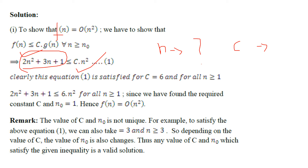The values of c and n₀ are not unique — you can have multiple cases. Depending on the value of c, the value of n₀ can also change. You have to show that for some value of c and n₀, this inequality is going to hold good.